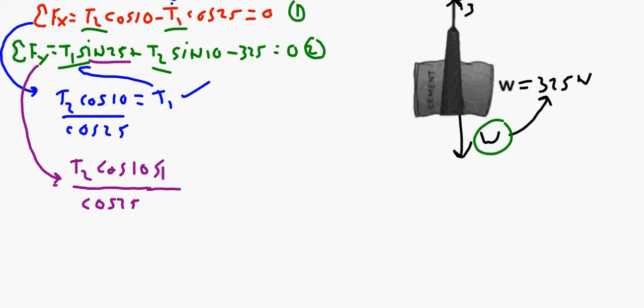Bear with me here. Imagine that's a sine 25. Plus I have this whole term, T2 sine 10 minus 325 equals zero. Now I have this equation and all I don't know is T2.